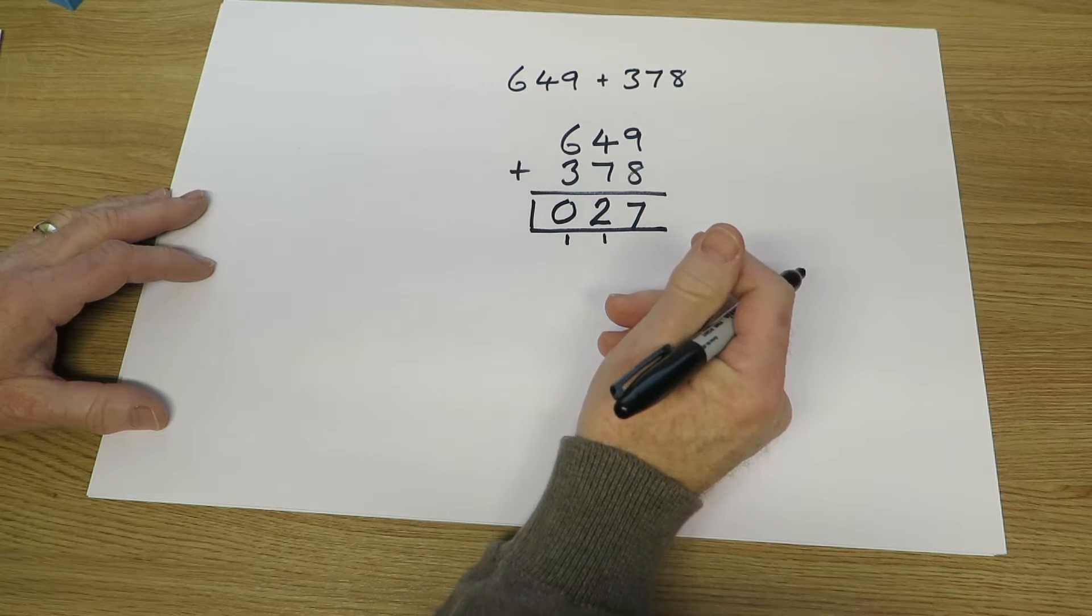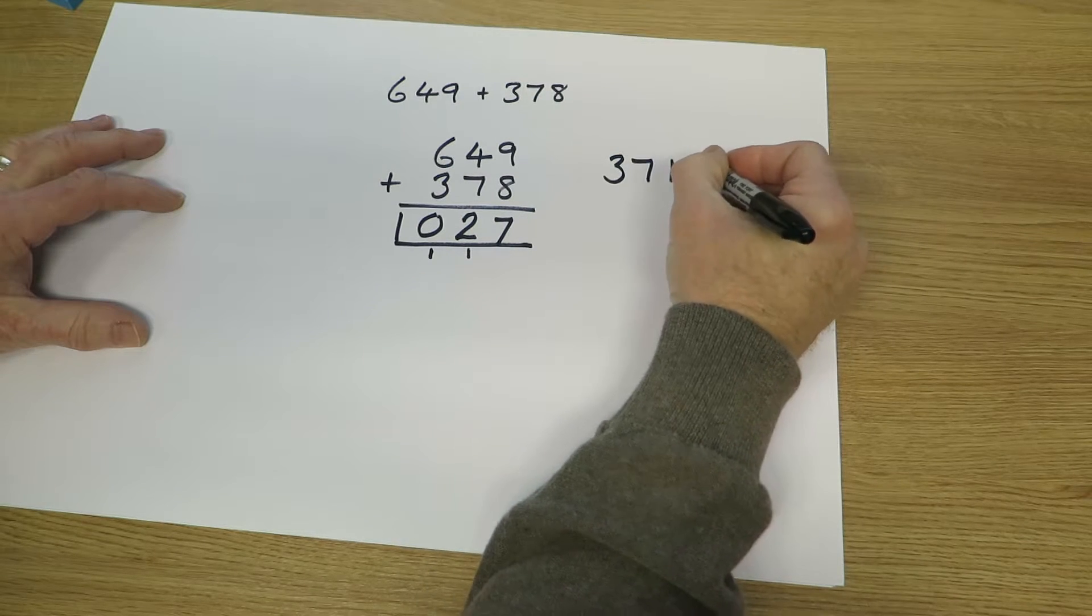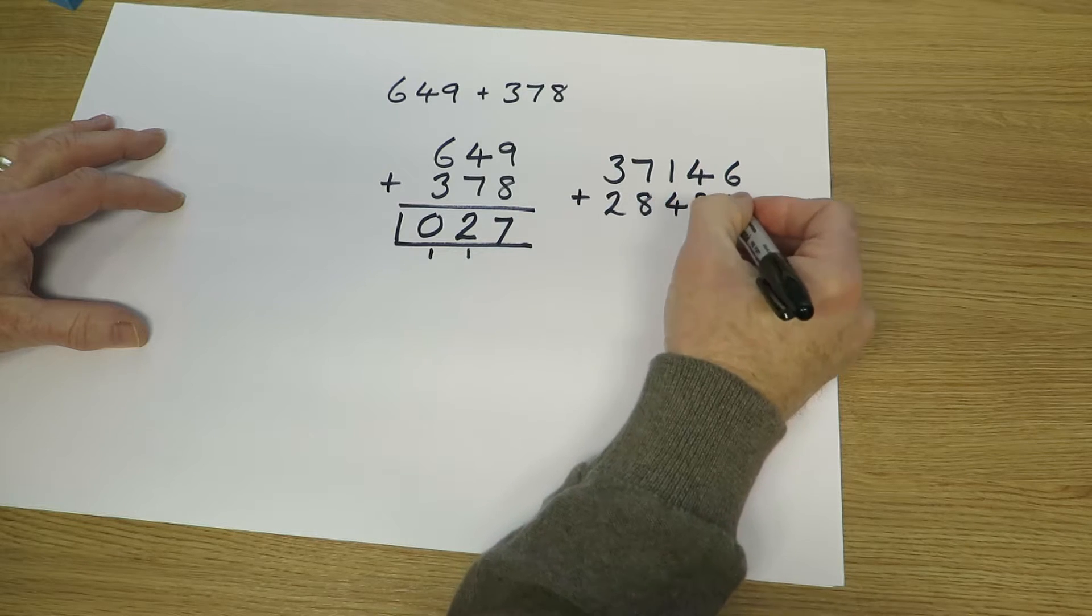Using these skills they're able to move on to larger numbers including numbers with more than four digits. 37,146 plus 28,491.